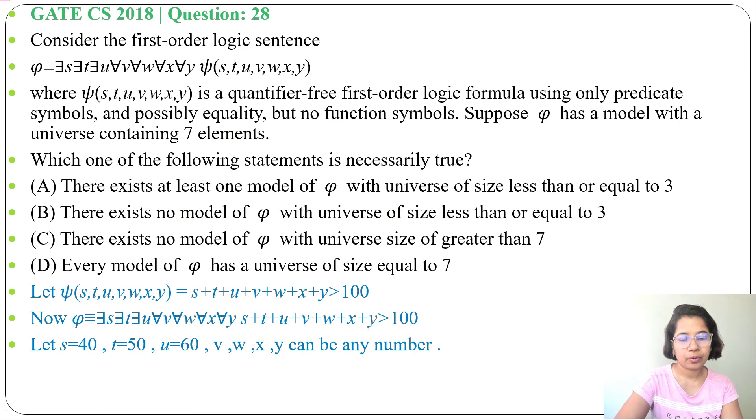So when s equals 40, t equals 50, and u equals 60, then for this model φ with universe of size equals 3 is true. When any of s,t, or u equals to 100...